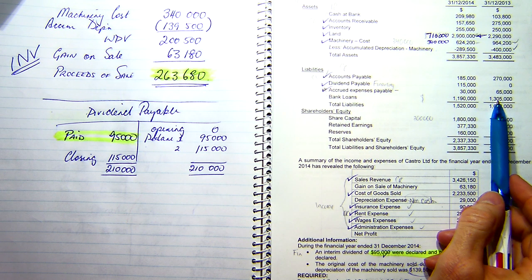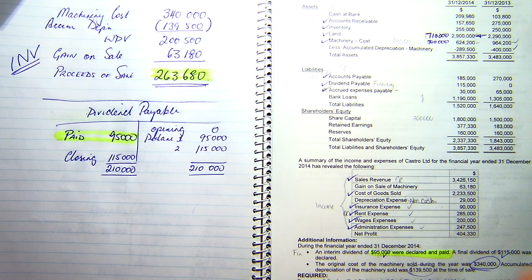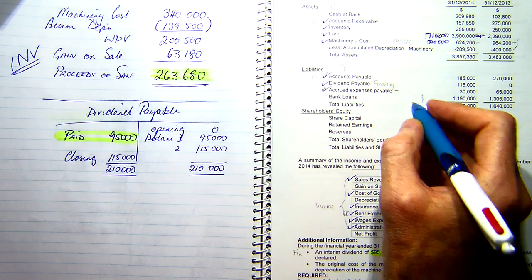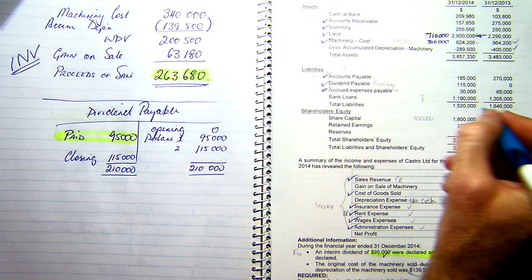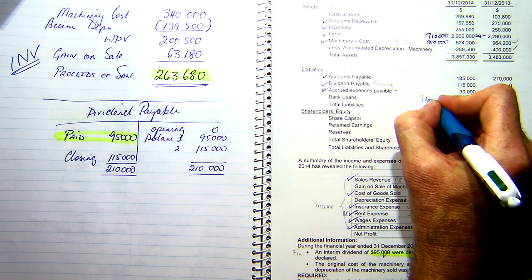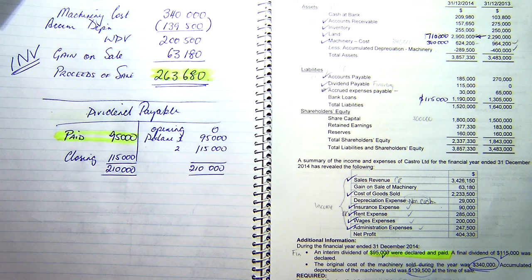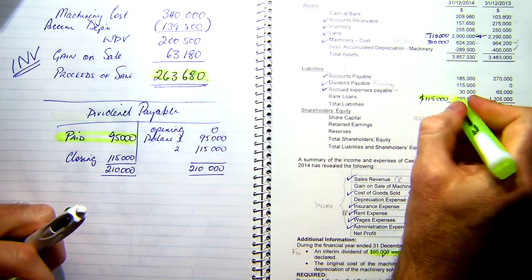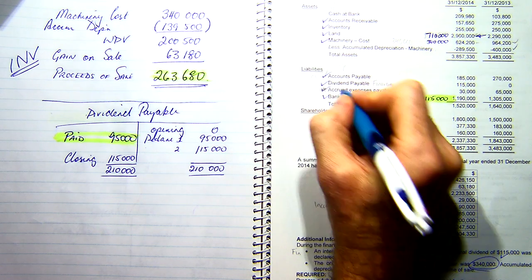I can look at my bank loans. I've gone from $130,500 in my bank loans to $119,000, so I must have paid off my bank loan. It doesn't tell me I borrowed any more money, so there's no cash flow in — there's a cash flow out here. And that comes in at $115,000. So that's a figure I'm going to take into my cash flow statement as well. That ticks off my bank loan.